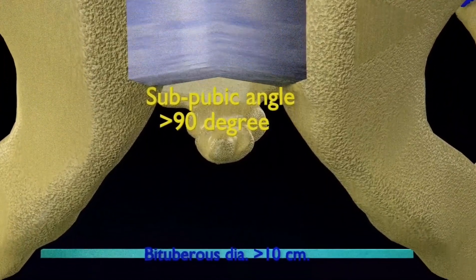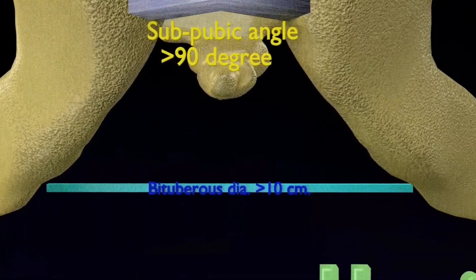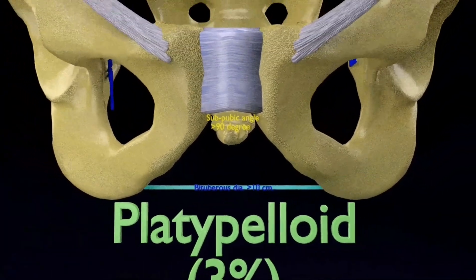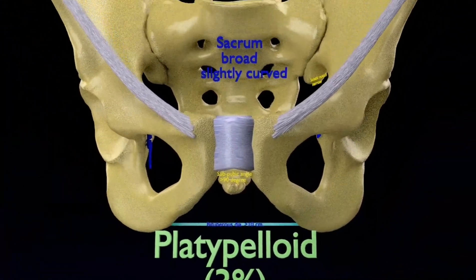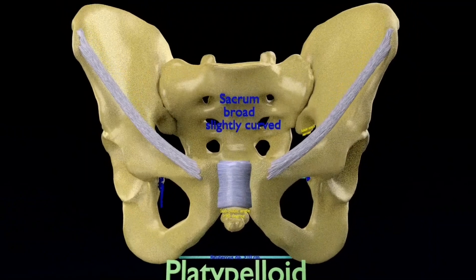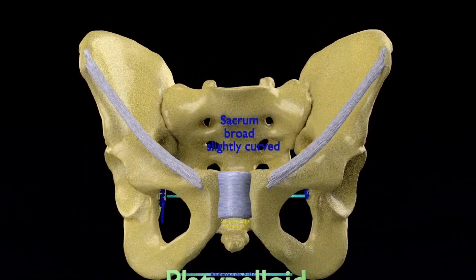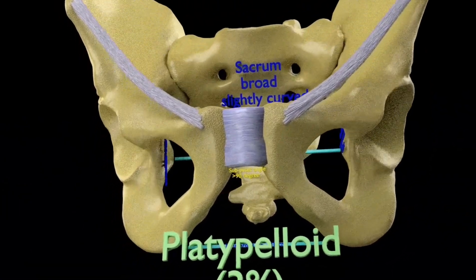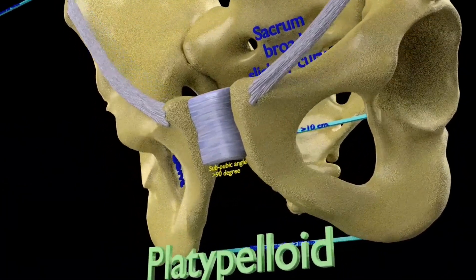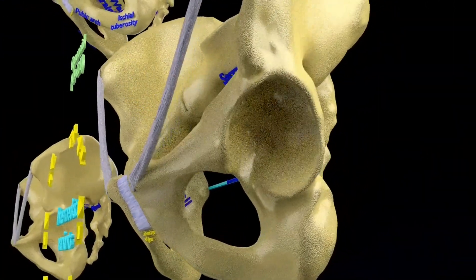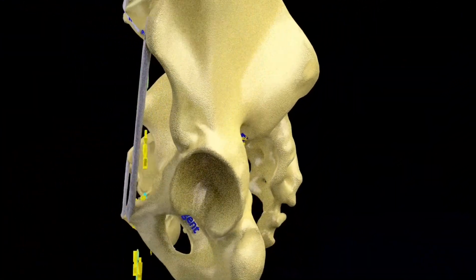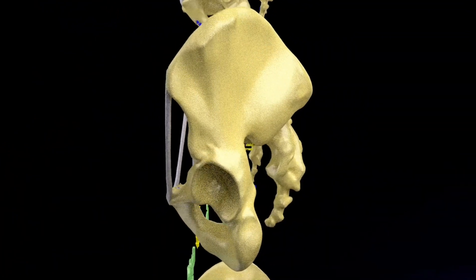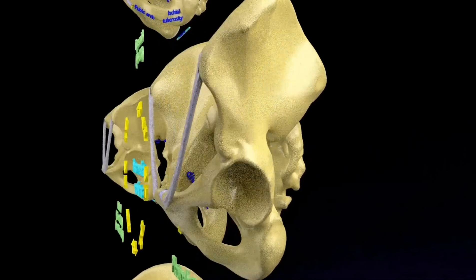The sub-pubic angle is more than 90 degrees with a bituberous diameter of more than 10 cm. All anteroposterior diameters are short and all transverse diameters are long. This shape makes vaginal birth difficult because the baby may have trouble passing through the pelvic inlet. Many pregnant women with the platypelloid pelvis need to have a C-section.